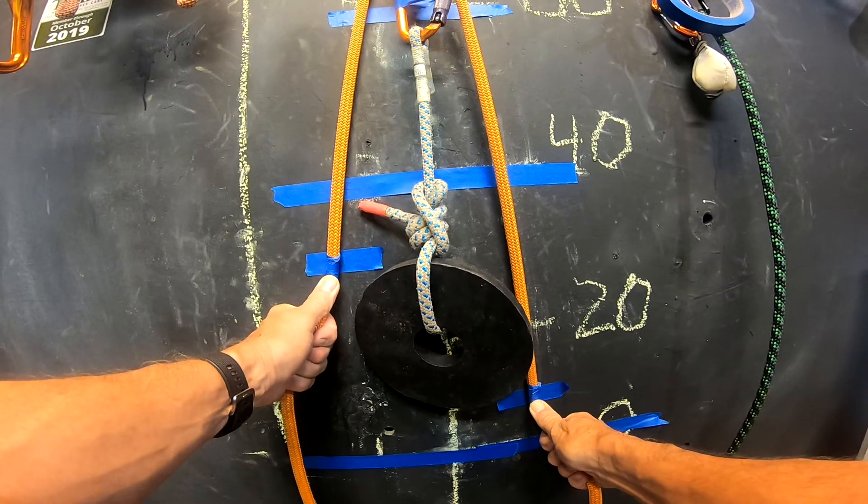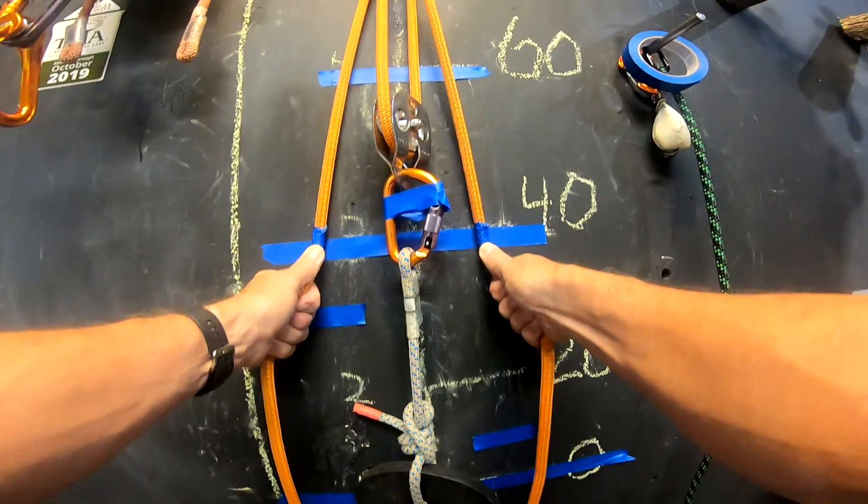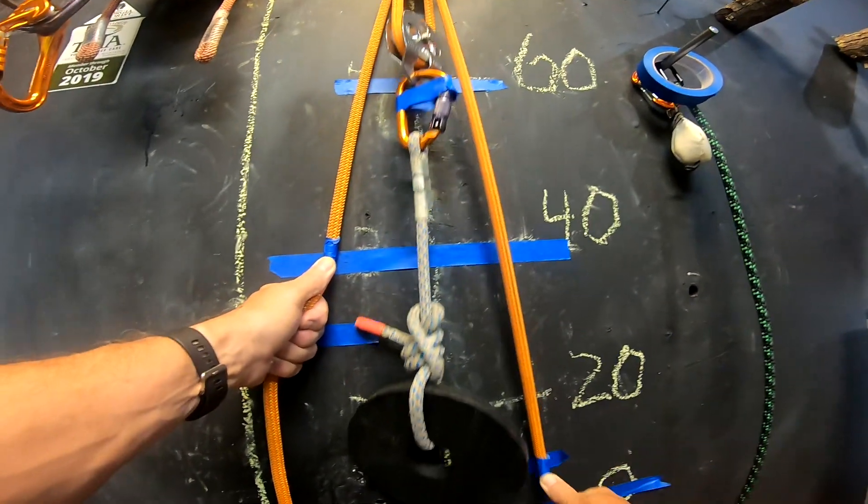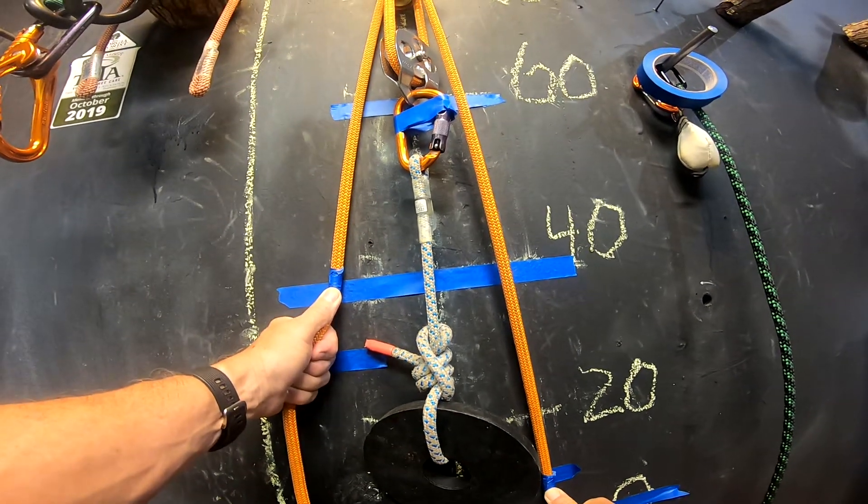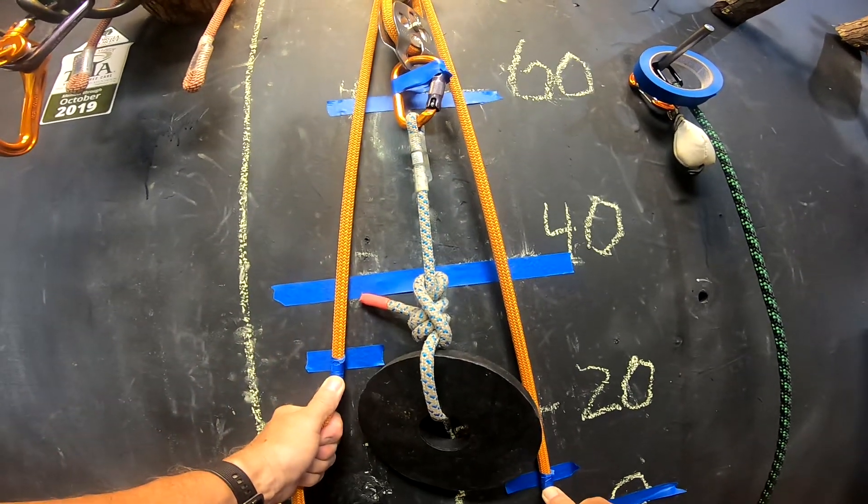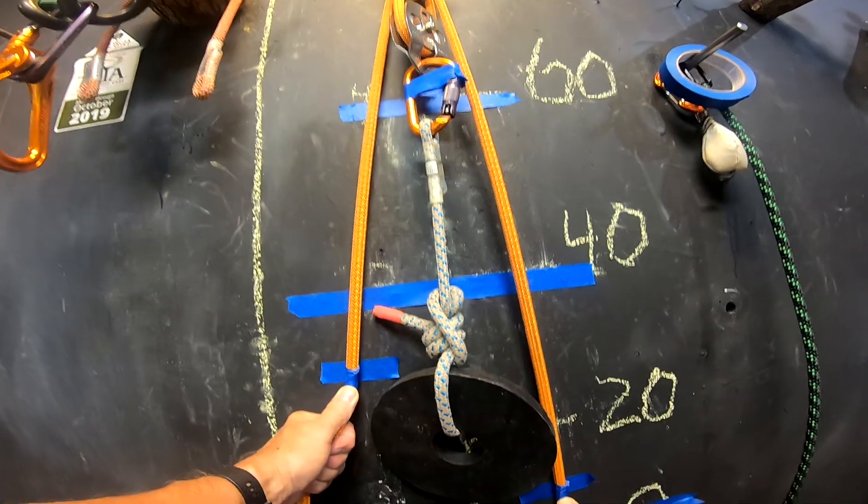I used mechanical advantage on the right side to get it most of the way to the point, and then mechanical advantage on the left side to get it to the point.